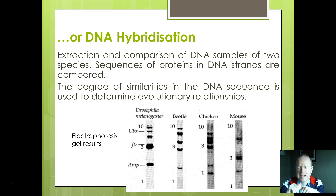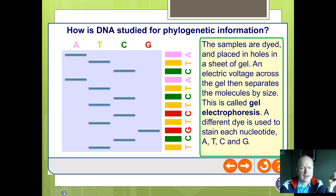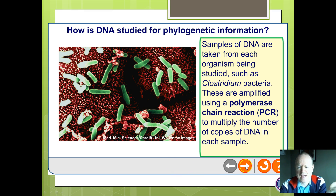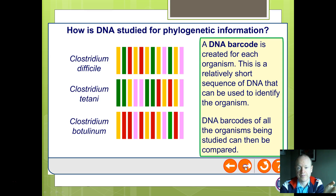We can also do DNA comparison — extracting and comparing DNA sequences to see how similar they are. We can amplify up the DNA, making multiple copies, using something called the polymerase chain reaction — see next year for more details. We then separate the DNA using gel electrophoresis, passing an electrical current through it. The heavier something is, the more difficult it is to move, so you can separate chunks of DNA into bands or stripes which show up when stained.